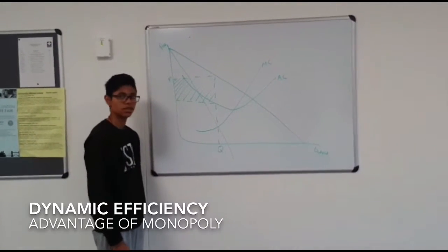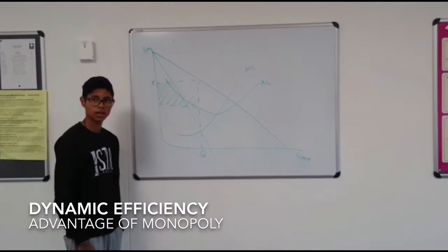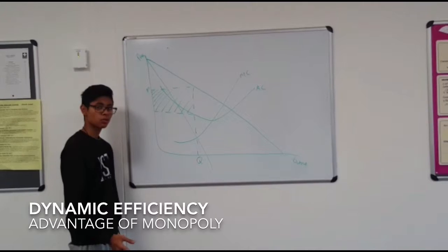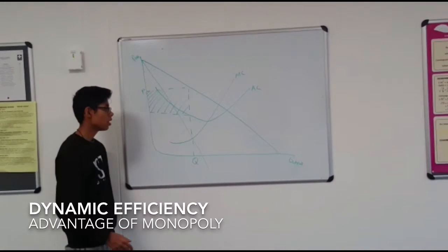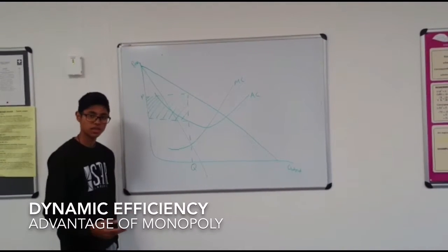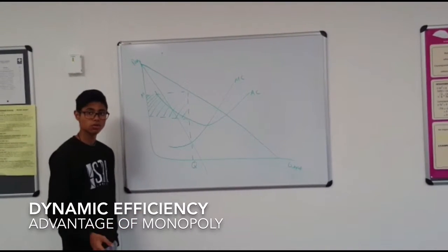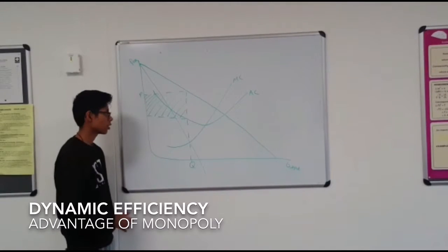An advantage is that dynamic efficiency can be achieved. The condition required for dynamic efficiency is that abnormal profits have to be made. These abnormal profits can then be spent on research and development and innovation. This in turn leads to better quality goods for consumers and a more efficient production process for the monopoly itself.